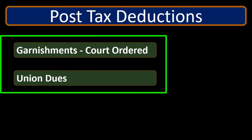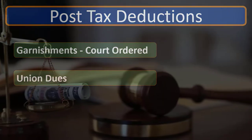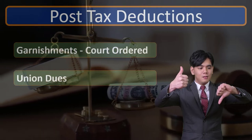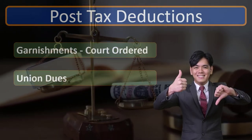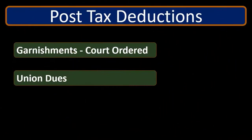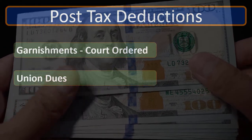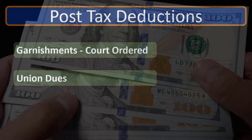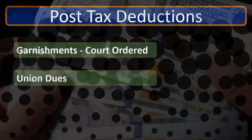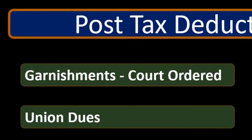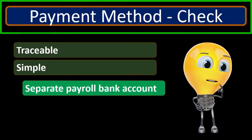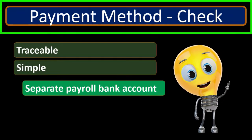Once we've calculated the tax, we then have things like garnishments, which are court-ordered items. If there are penalties that the court has required, garnishments will need to be paid to whoever by the employer. So the employer has the responsibility to make the payment on behalf of the employee by court order. Union dues — if there's a negotiation that requires union dues be taken out — are also going to be required deductions, and are not something that decreases the taxable income.